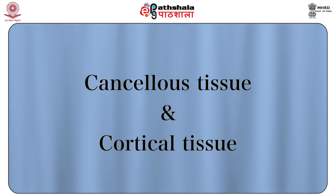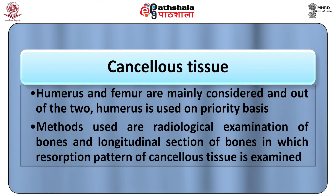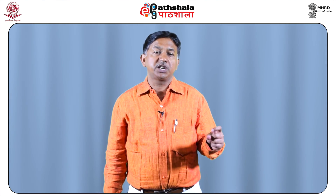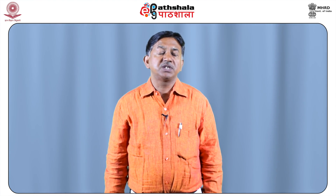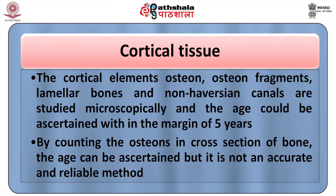For the internal bone structure, two structural components are studied: cancellous tissue and cortical tissue. For cancellous tissue, the humerus and femur are mainly considered, with the humerus used on a priority basis; methods include radiological examination and longitudinal section of bones in which the resorption pattern of cancellous tissue is examined. The proximal end of the medullary cavity of the humerus assumes a cone shape, the tip of which gradually reaches the surgical neck during 40 to 50 years and further ascends to the epiphyseal line by 60 to 75 years. The cortical elements — osteons, osteon fragments, Haversian canals — are studied microscopically; age can be ascertained within a margin of five years by counting osteons in cross-section, though it is not a fully accurate or reliable method.